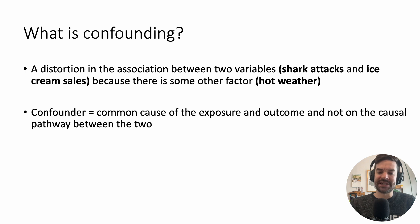The definition: confounding is a distortion in the association between two variables — in that example, shark attacks and ice cream sales — because of some other factor, in that case hot weather. Taking it one step further, a confounder is a common cause of the exposure and outcome, and is not on the causal pathway between the two.